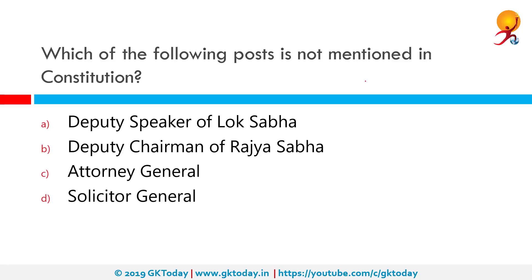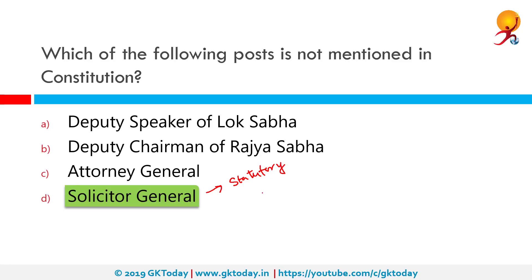Which of the following posts is not mentioned in the Constitution? The correct answer is the Solicitor General of India. The Solicitor General is subordinate to the Attorney General of India and assists as the second law officer of the country. He also has Additional Solicitors General assisting him — there are four of them currently. The Solicitor General is Tushat Mehta. Unlike the post of Attorney General, which is a constitutional post under Article 76, the post of Solicitor General of India is statutory — it is not mentioned in the Constitution but is created by statute.